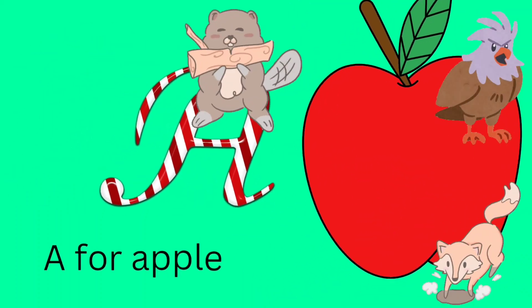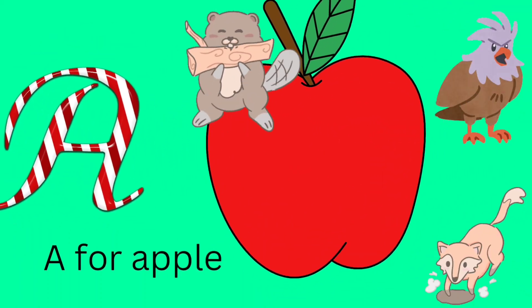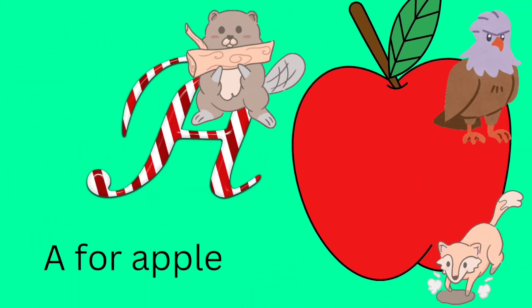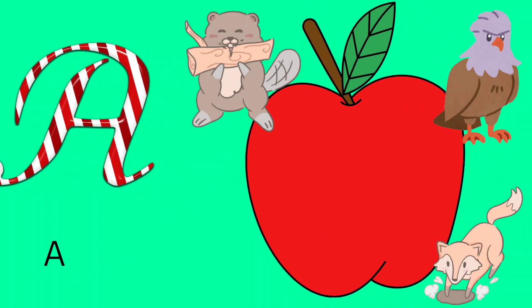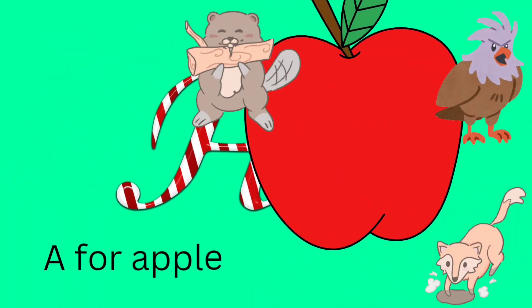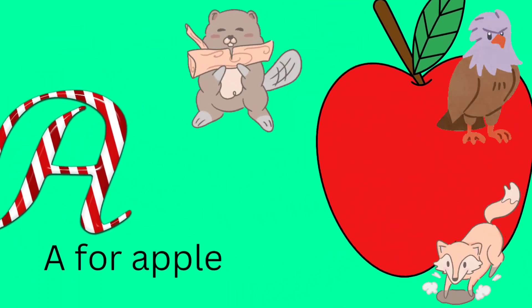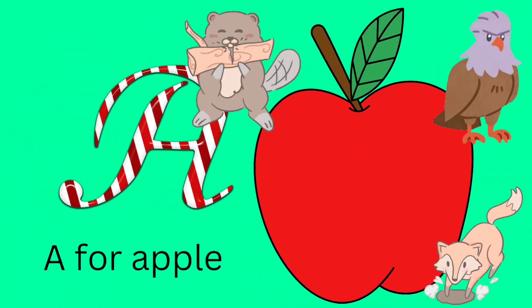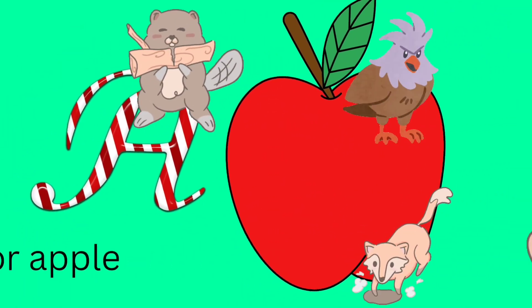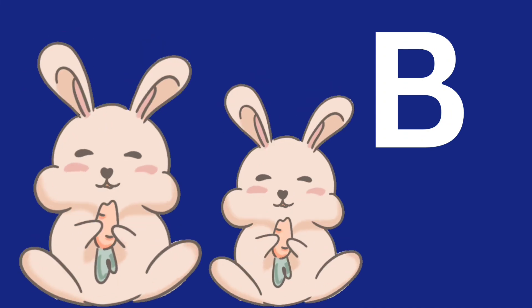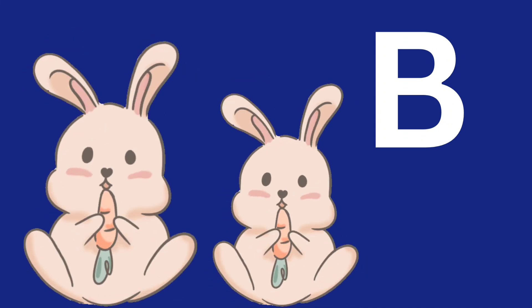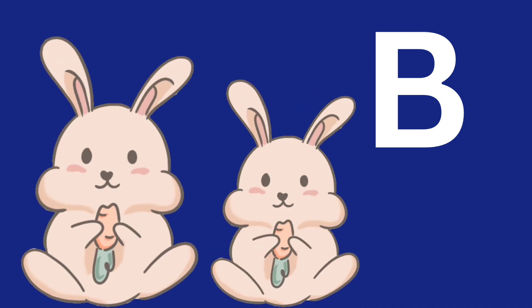Let's learn alphabets. A. A is for Apple. Apple. B. B is for Bunny. Bunny.